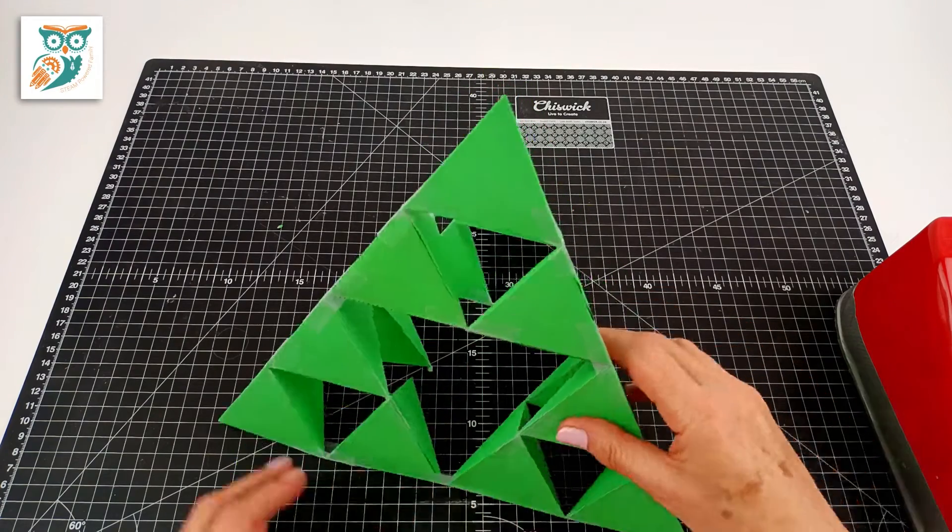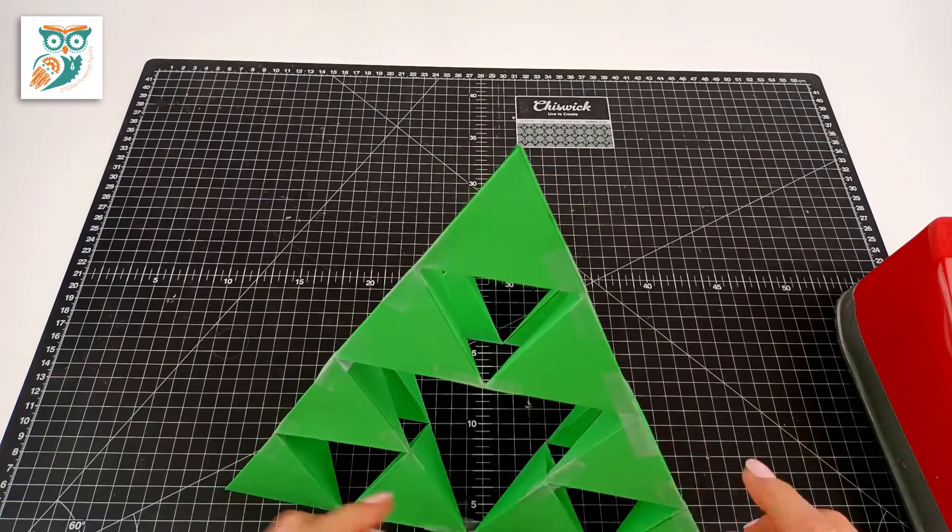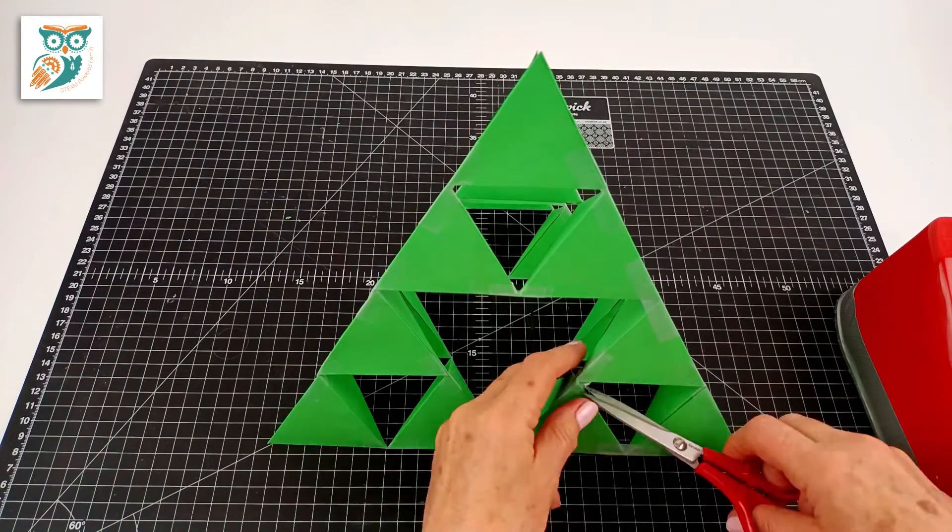So we're just attaching all those little points of our triangles together with the tape until we have a nice solid structure. And if you notice any weak spots like we just noticed there you can add a little extra tape to help strengthen them.